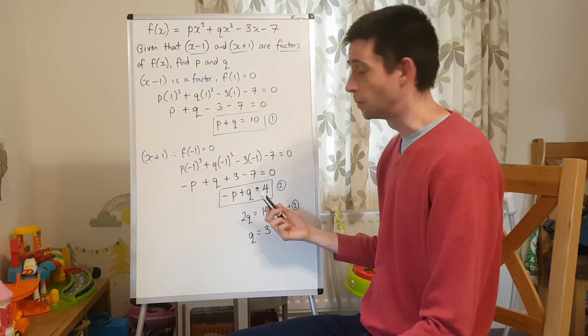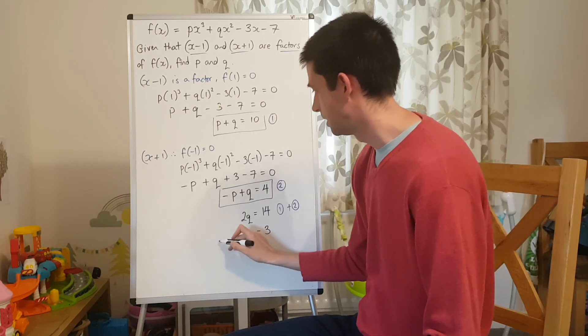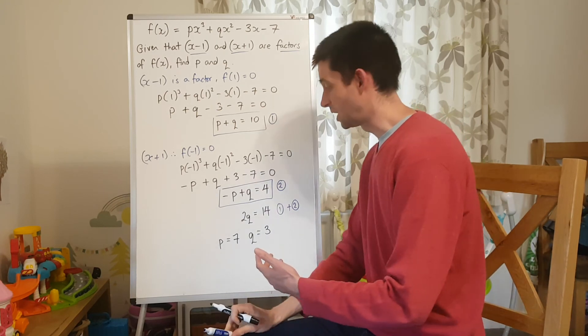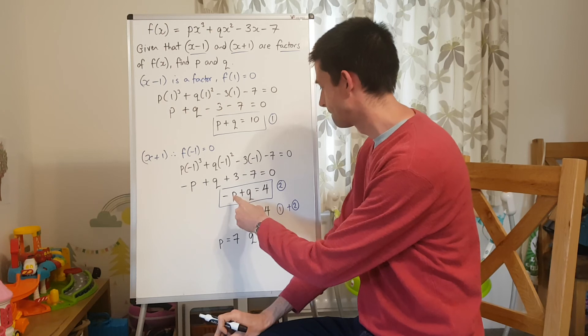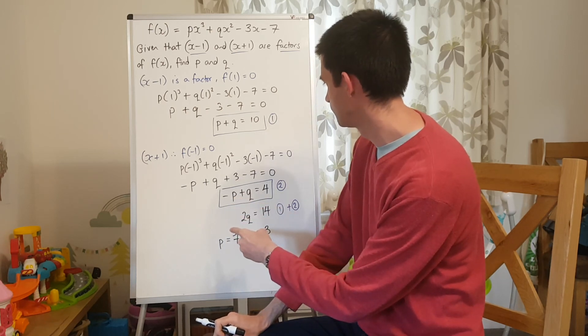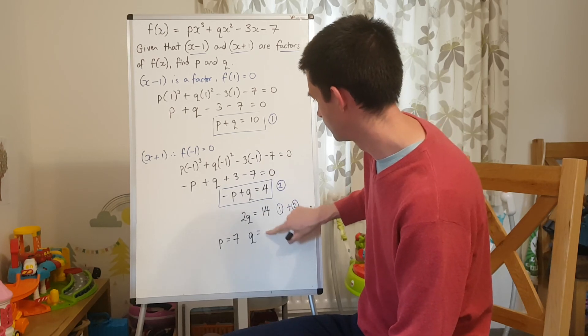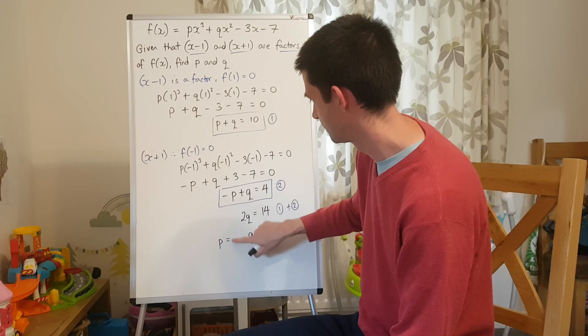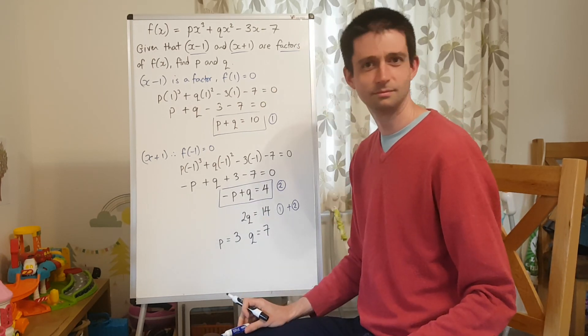And then I can look at either one of these simultaneous equations. So, if q is 3 and p + 3 is 10, then p must be 7. Check that works for the other one. Negative 3. Sir, do you mean q is 7? I mean, q is 7. That means p is 3, doesn't it? And that works? Nice one.